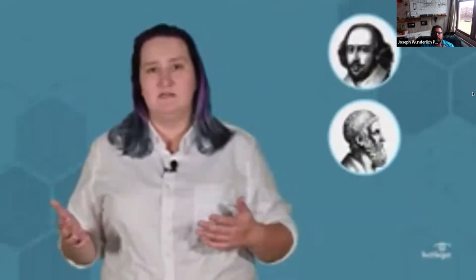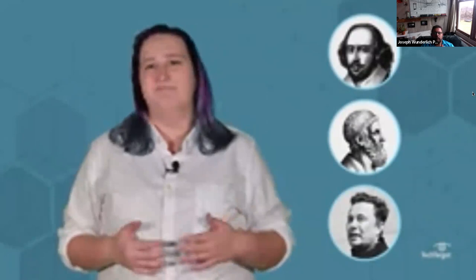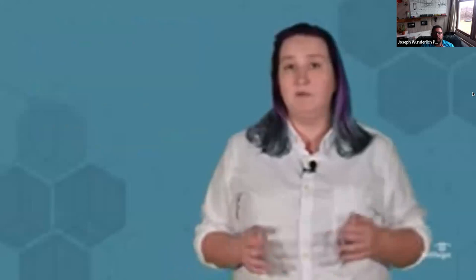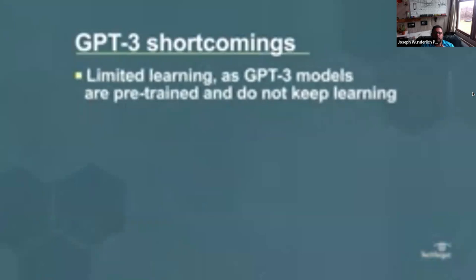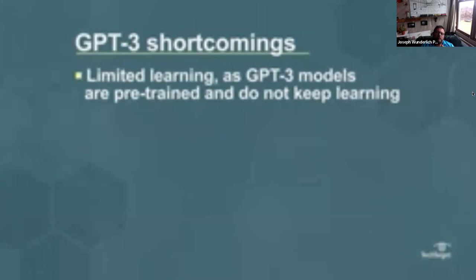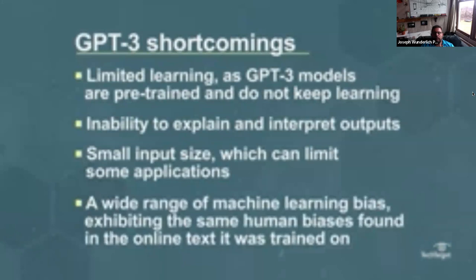GPT-3 can be used to create content in the style of anyone — it could generate a poem in the style of Shakespeare, give advice from Aristotle, simulate a conversation with Elon Musk. GPT-3 is a great solution for when large amounts of text need to be generated from a small amount of input, but it has several shortcomings: limited learning, as GPT-3 models are pre-trained and do not keep learning; inability to explain and interpret outputs; small input size which can limit some applications; and a wide range of machine learning bias exhibiting the same human biases found in the online text it was trained on.